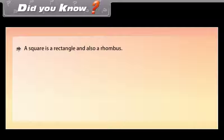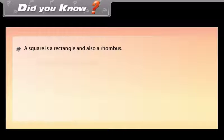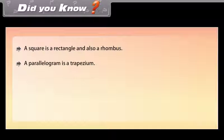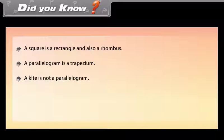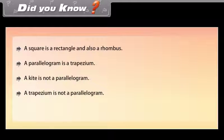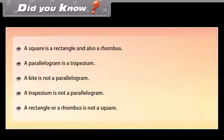Did you know? A square is a rectangle and also a rhombus. A parallelogram is a trapezium. A kite is not a parallelogram. A trapezium is not a parallelogram. A rectangle or a rhombus is not necessarily a square.